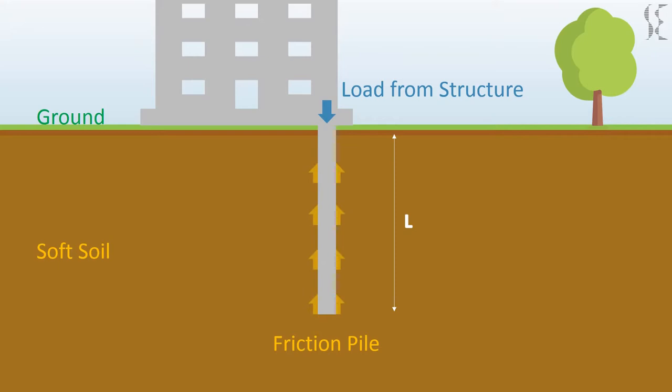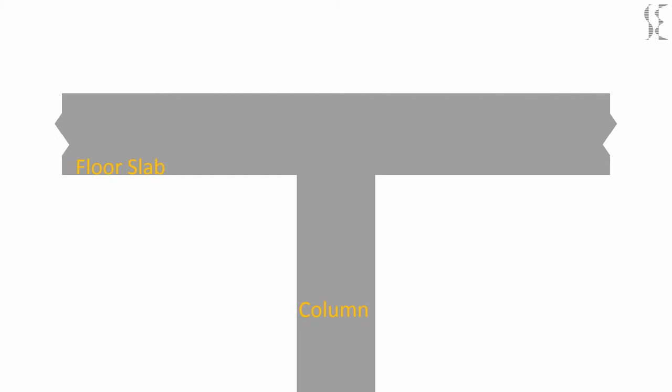Now let's assume a concrete floor slab in a building supporting a column with load W. The column will punch into the slab if the slab and reinforcement in it are not able to resist the shear stresses.